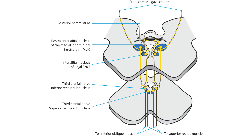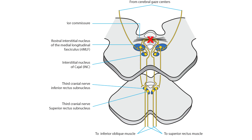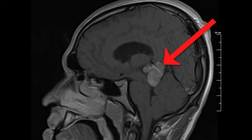Selective damage to the thalamus, dorsal midbrain, or posterior commissure will disrupt upward saccades and may even cause downward gaze deviation called sunset eyes. In some patients, look for a dramatic eye movement called convergence retraction. Watch the eyes in this patient with a pineal tumor.